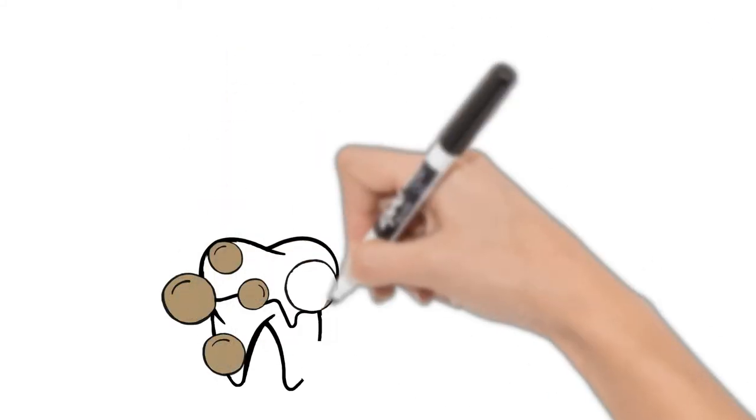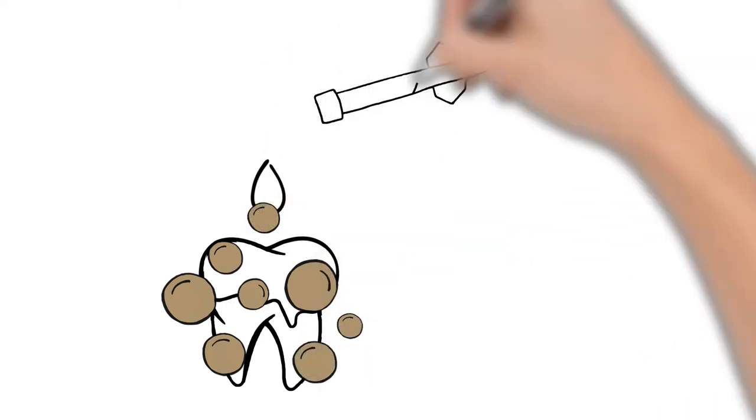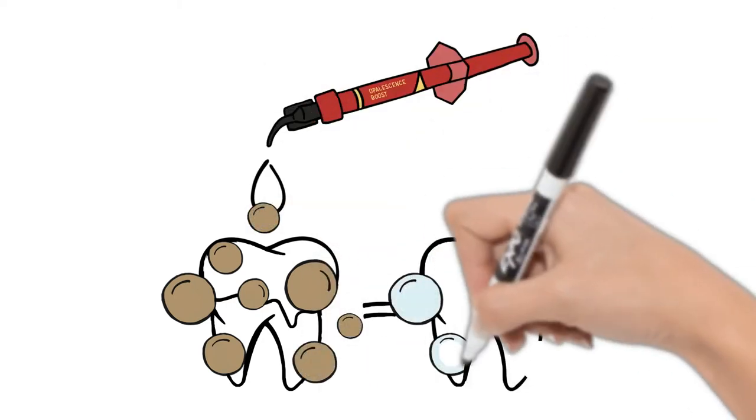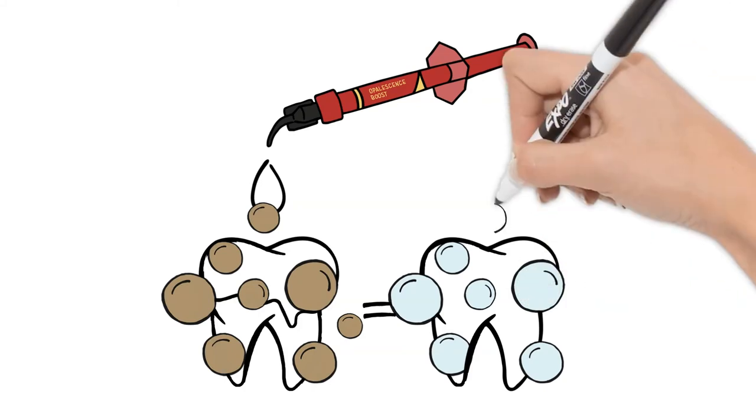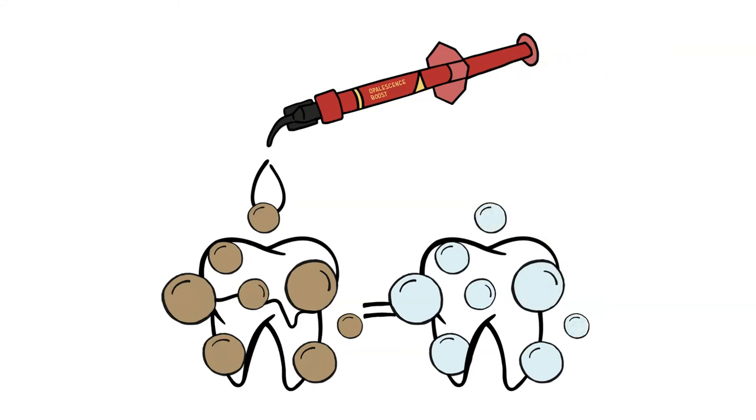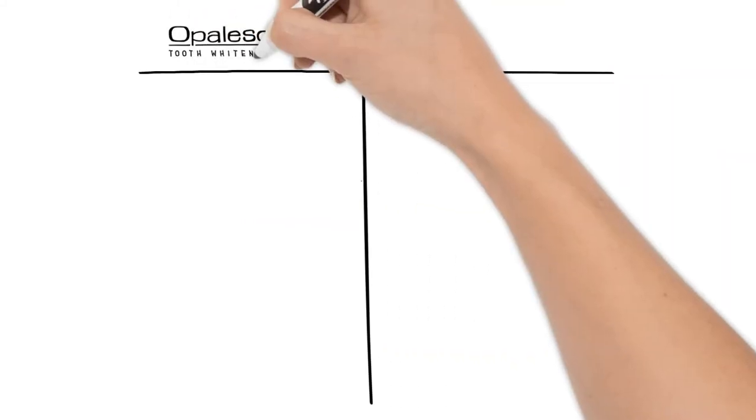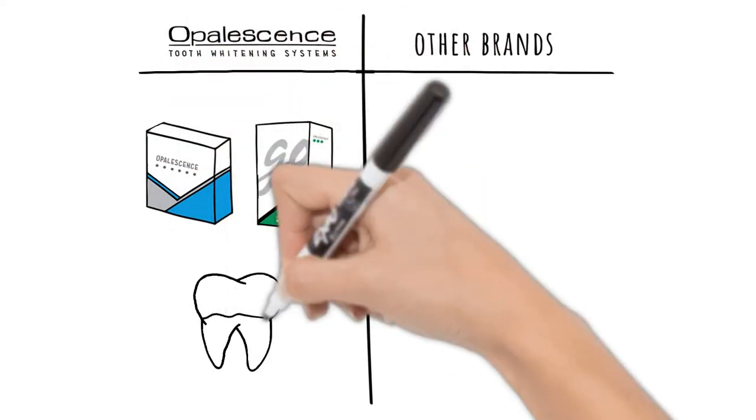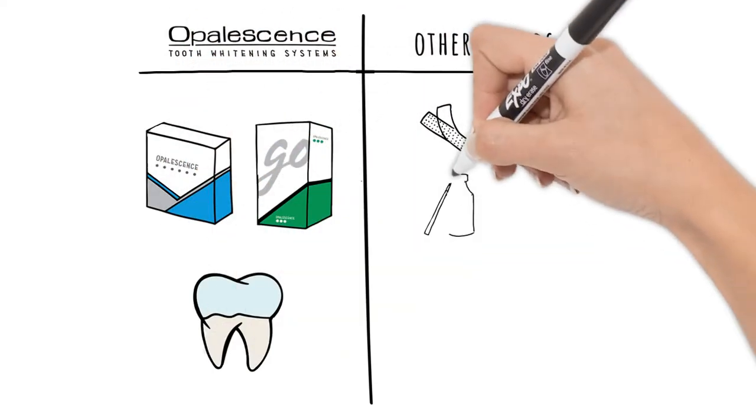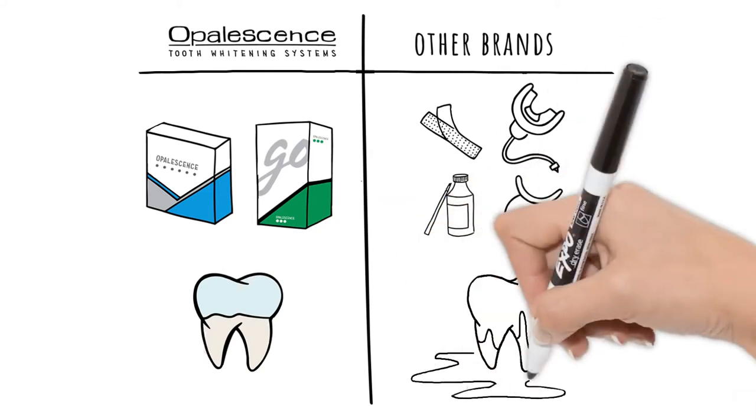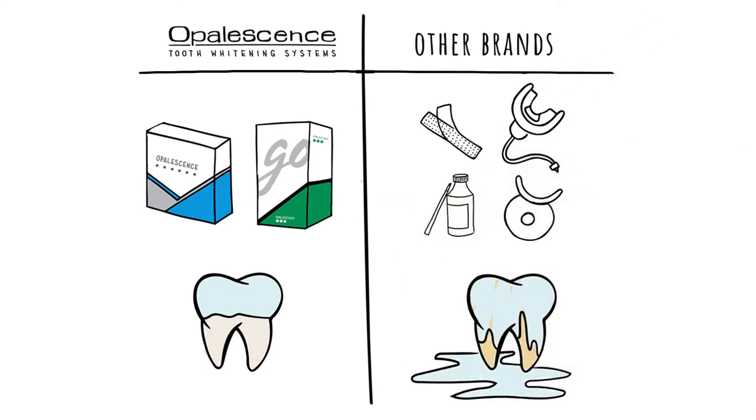The peroxide in Opalescence teeth whitening gels pass into your teeth to oxidize the discolored molecules in your enamel and dentin, removing stains and whitening your smile. Unlike other formulas, our gel is sticky and viscous, so it sticks in place for maximum effectiveness and doesn't go anywhere you don't want it, like your gums, for example.